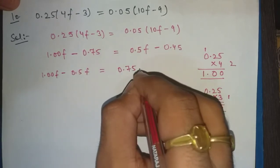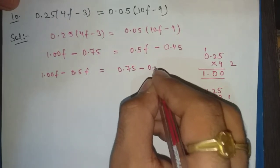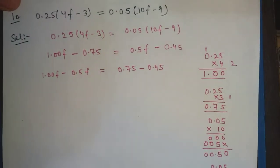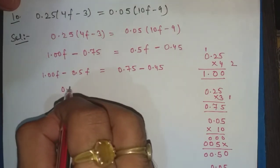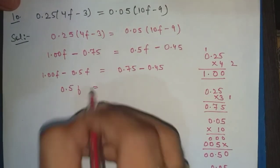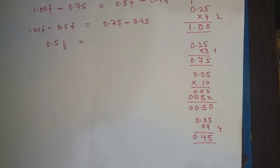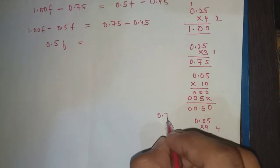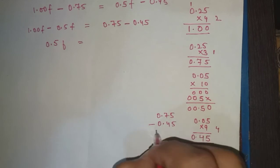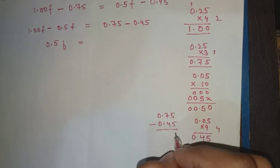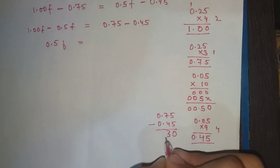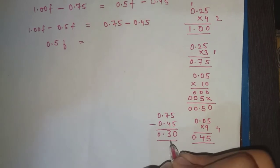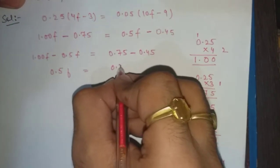1.00f minus 0.5f, the answer is 0.5f. Now look at 0.75 minus 0.45: 5 minus 5 is 0, 7 minus 4 is 3, so the answer is 0.30.